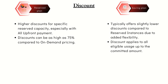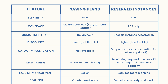Standard Reserved Instance provides the highest discount — up to 75% — but they are less flexible. Convertible Reserved Instance offers a lower discount — up to 54% — but allows you to exchange them for other reserved instances with different configurations. In summary, choose Saving Plan for flexibility and wider service coverage, whereas use Reserved Instance when you have predictable workloads requiring guaranteed capacity at significant discount.